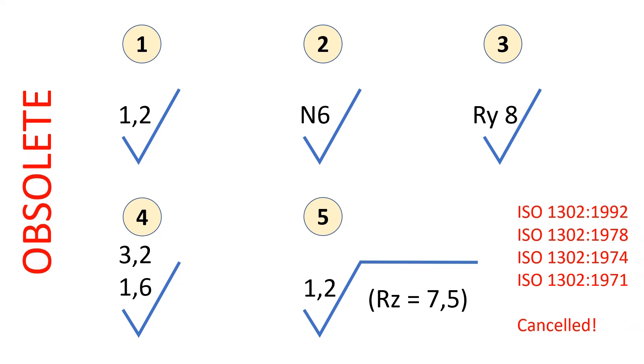These indications, linked to old versions of standards, refer to old parameter definitions, either from ISO 4287 of 1984, also obsolete, or from ISO 468 of 1982, cancelled since. Again, these notations should not be used anymore on modern drawings.